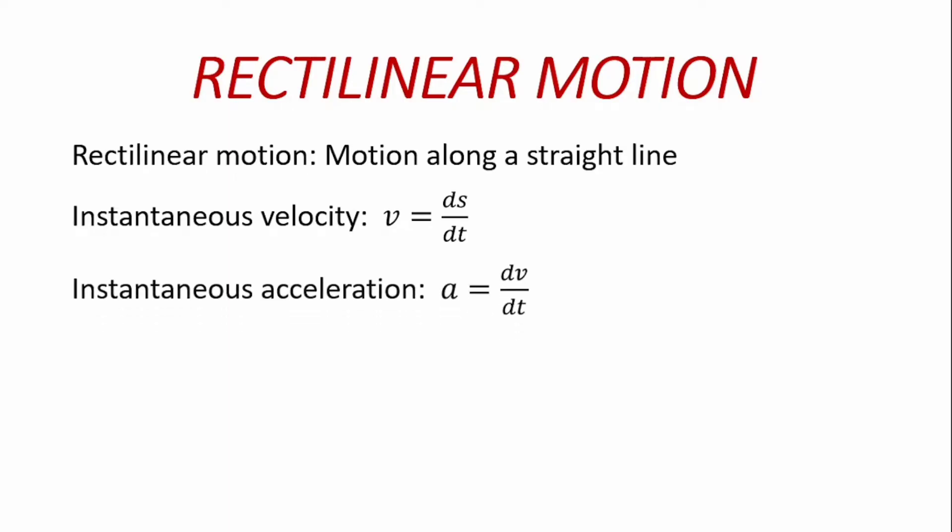Then also, instantaneous acceleration, which is the acceleration at any point in time, is given as the rate at which velocity is changing with time. So a is equal to dv/dt. And if we bring these equations together, v equals ds/dt and a equals dv/dt. These are the two key equations we shall be applying as far as rectilinear motion is concerned for kinematics of particles.